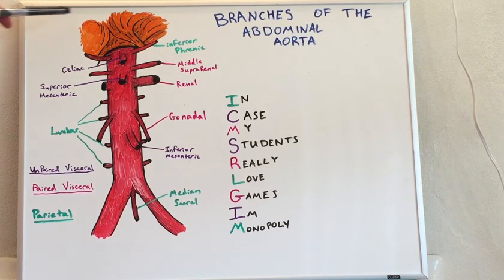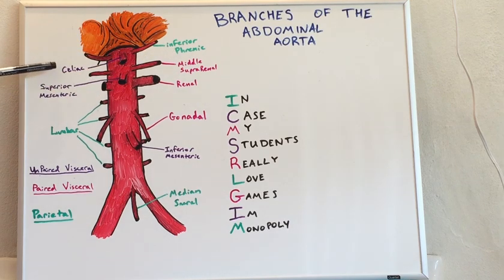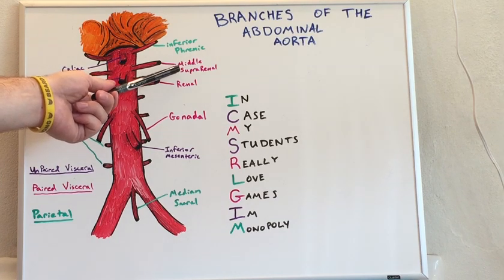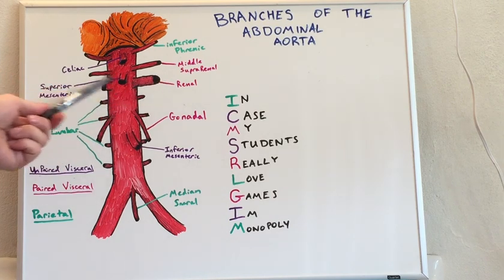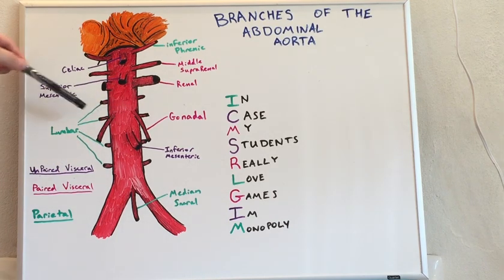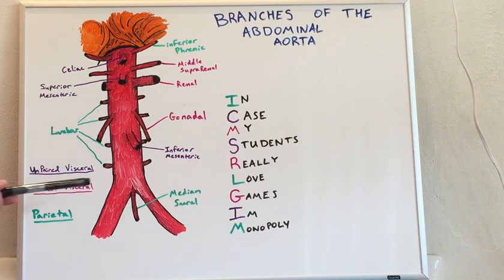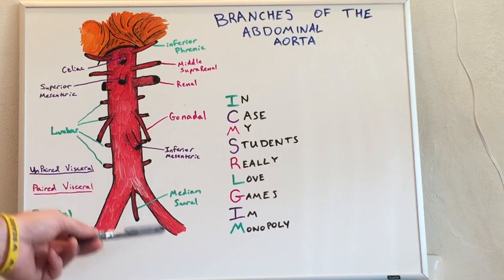Let's go through them. Just inferior to the diaphragm, we have the inferior phrenic artery, followed by the celiac trunk, the middle suprarenal artery, the superior mesenteric artery, the renal arteries, then we have a series of lumbar arteries on the parietal aspect. We have the gonadal arteries, the inferior mesenteric, and down here, the median sacral before the aorta bifurcates into the common iliacs.